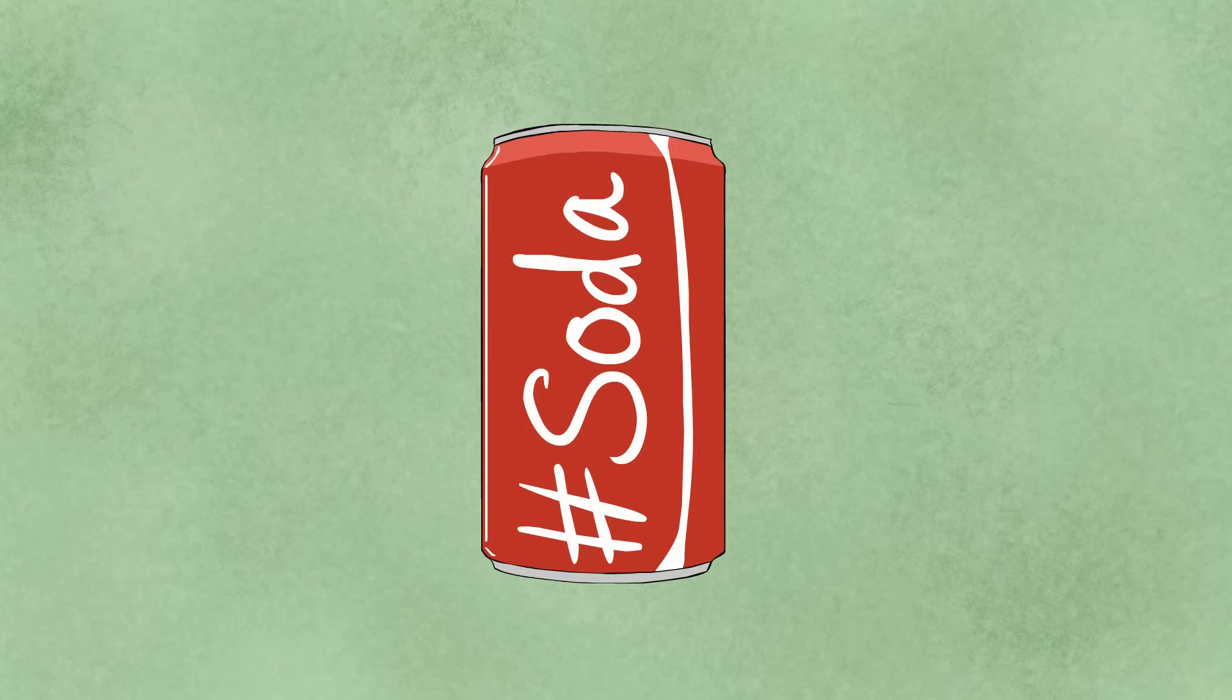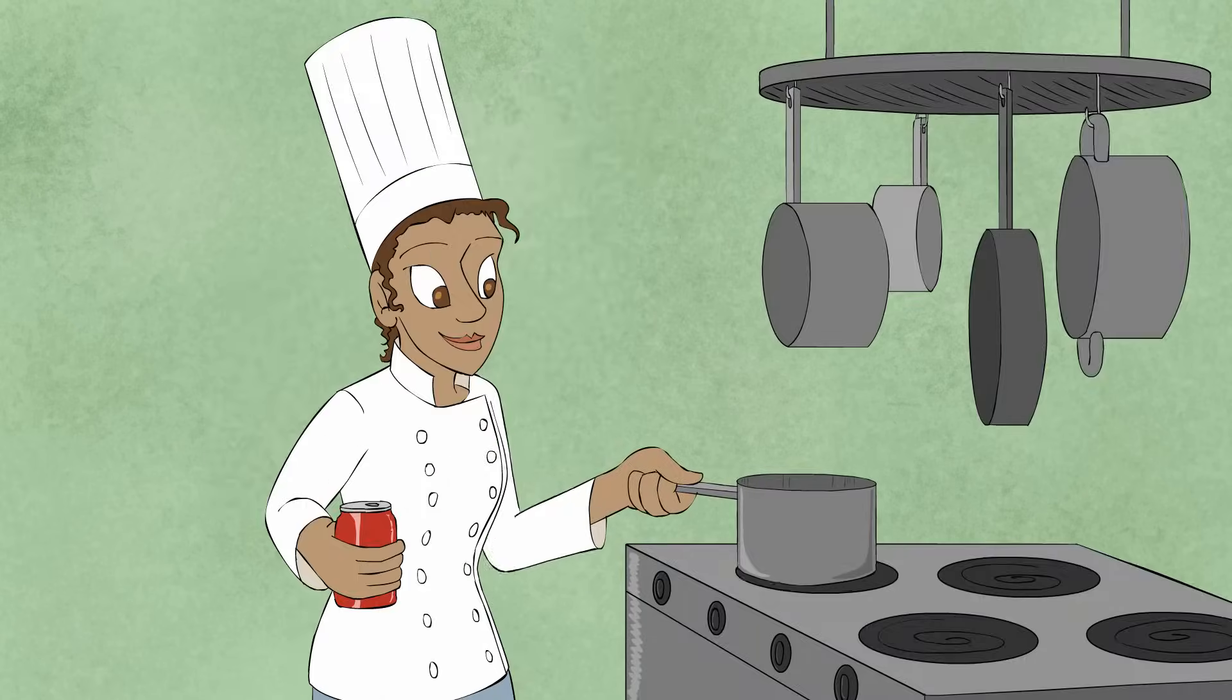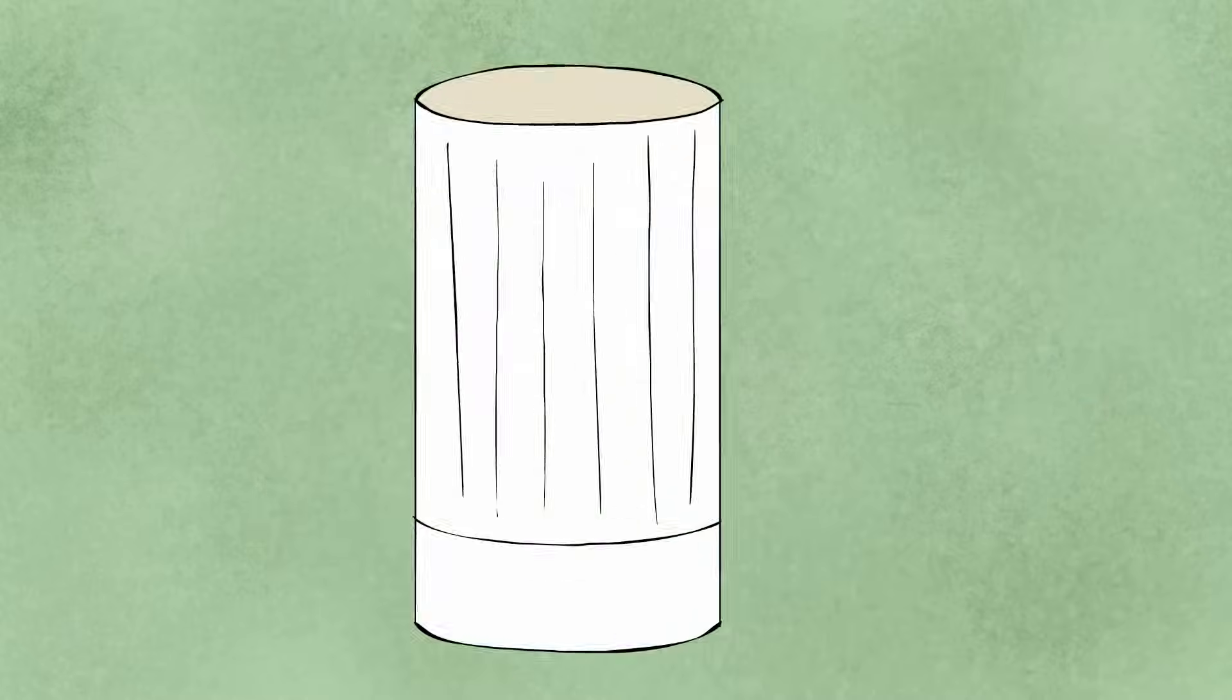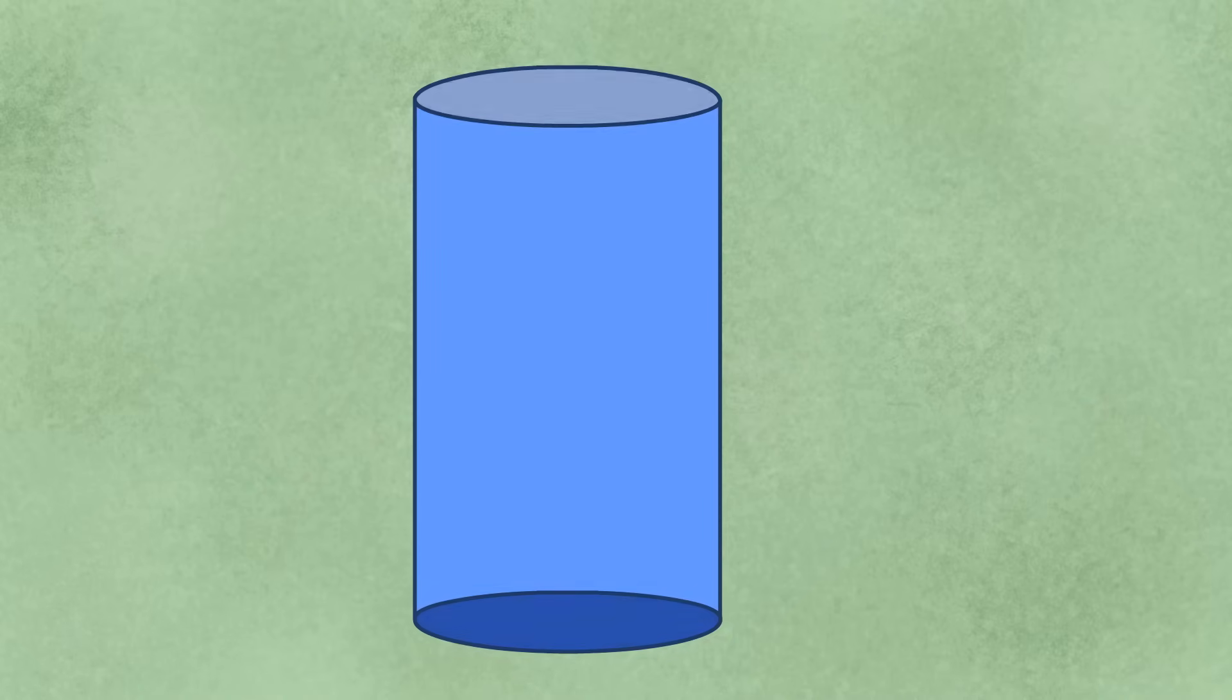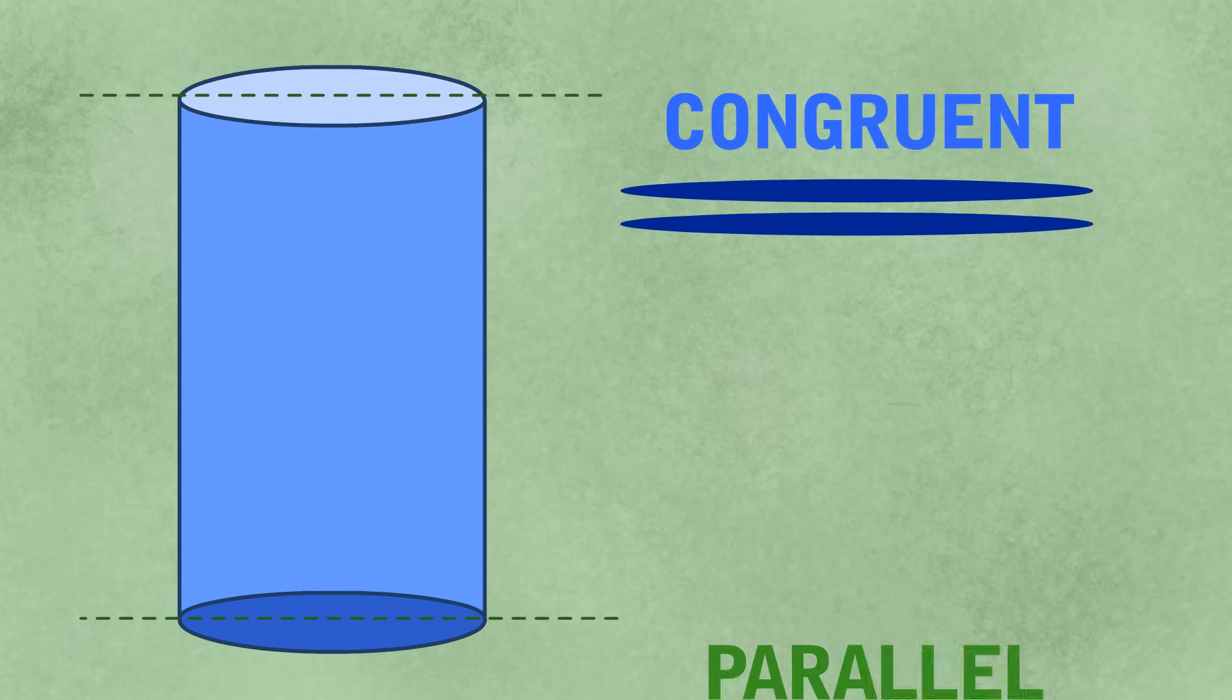Cylinders look like soda cans, they're the shape of pots and pans, they have two circular bases that are congruent and parallel faces.